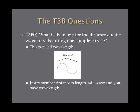What is the name for the distance a radio wave travels during one complete cycle? The answer is wavelength. If you look at the diagram here, I have a wavelength drawn out. From start to finish, it's the distance of one complete cycle. Just remember, the distance is length — add the wave to that and you have wavelength.